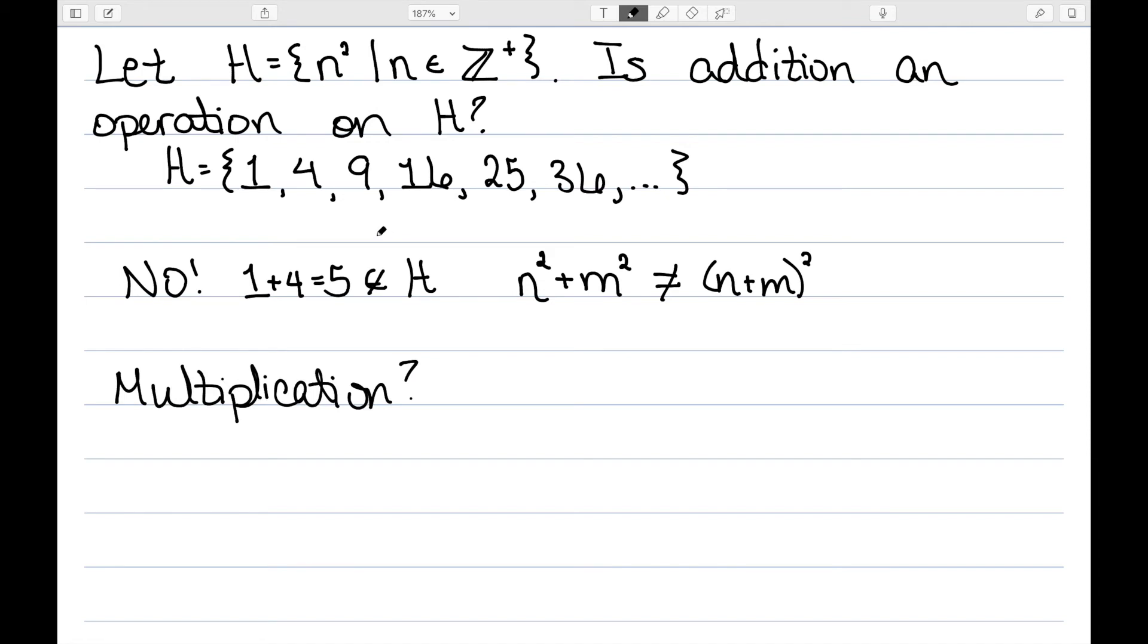Is multiplication an operation on this set? We could try to multiply some of these. For instance, 4 times 9 is 36, so that seems to work. But we don't want to prove it that way. Showing that something doesn't work is a counterexample. It's a great way to prove something is not true. But if it proves something is true, we would have to check every single possible multiplication on this infinitely long set.